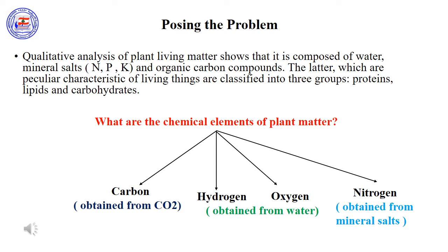What are the chemical elements of the plant matter? The main chemical elements of the plant matter are carbon, hydrogen, oxygen, and nitrogen. As we studied in activity 3, carbon is obtained from the absorbed carbon dioxide, while hydrogen and oxygen are obtained from water, H₂O. However, nitrogen is mainly obtained from the absorbed mineral salts.